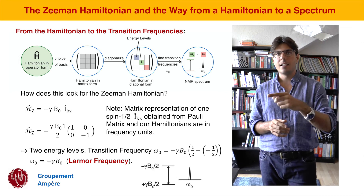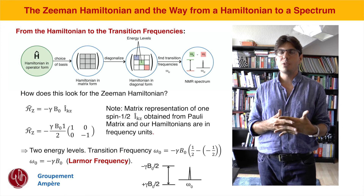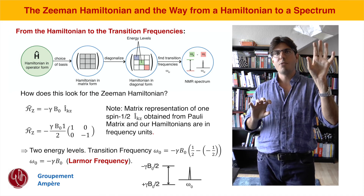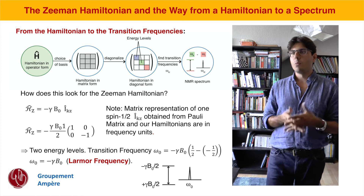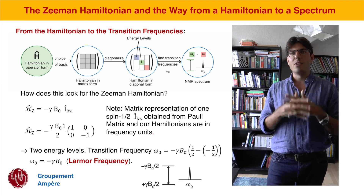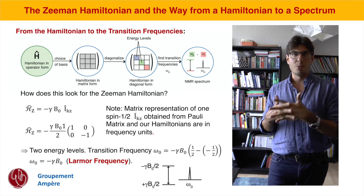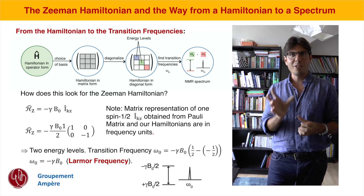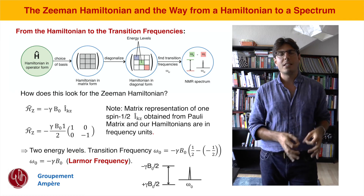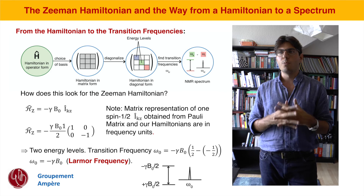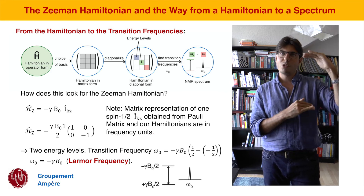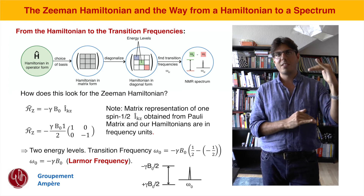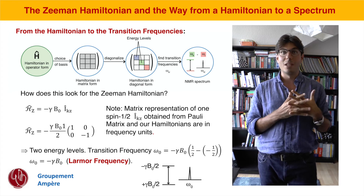The diagonal elements are our energy levels, and the transition frequency position is just the difference between these two elements: 1/2 minus (−1/2) = 1/2 + 1/2 = 1, multiplied by minus gamma times B0 still standing in front of the matrix. What we obtain is that the transition frequency ω₀ equals minus gamma times B0. We only have two energy levels in a spin-1/2 system with only one spin, so we have only one possible transition, and the transition frequency equals the Larmor frequency.